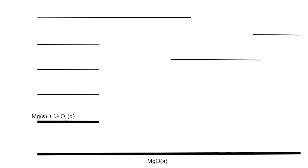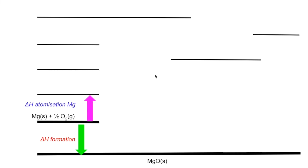The last example is magnesium oxide, which looks a bit different. Again, we have the enthalpy change of formation. Notice we have half a mole of O₂ — similar to the half mole of Cl₂ in the NaCl case, so that's easier in that respect, but there's a twist. We atomize the magnesium to get a gaseous atom, then atomize the oxygen to give one mole of gaseous oxygen atoms.